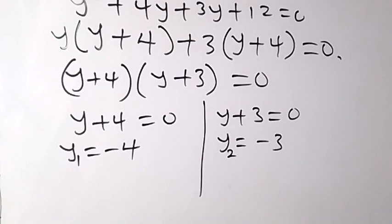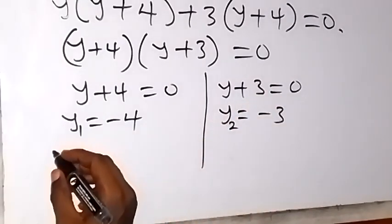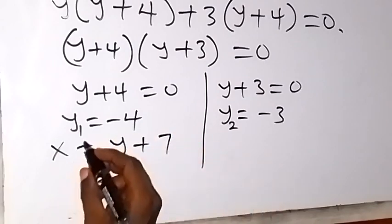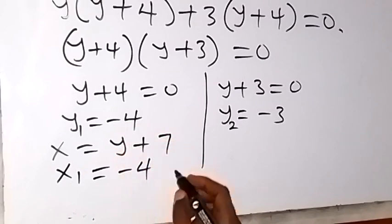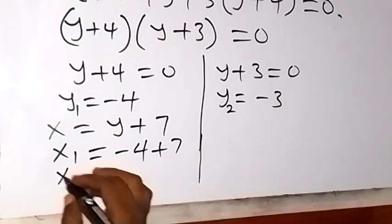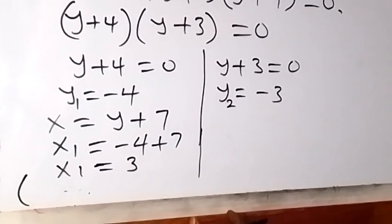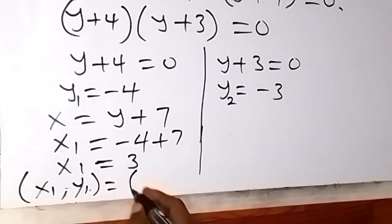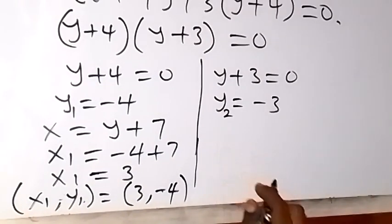From here, we can get the corresponding value of x for each of them. Remember from equation 3, we have x equals y plus 7. To get x1 now, the first value of x, x1 will give us y, which is minus 4 for y1, plus 7. Minus 4 plus 7 is like 7 minus 4, and that means x1 will give us 3. So the first set of solution, x1 comma y1, is 3 comma minus 4.